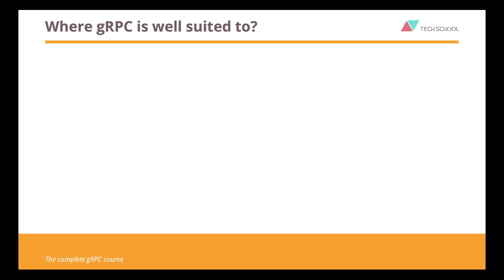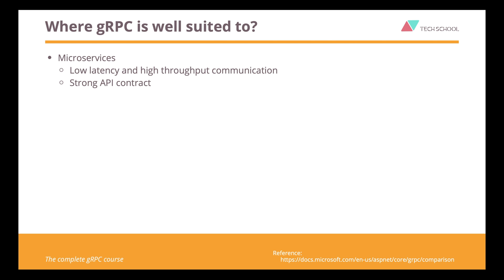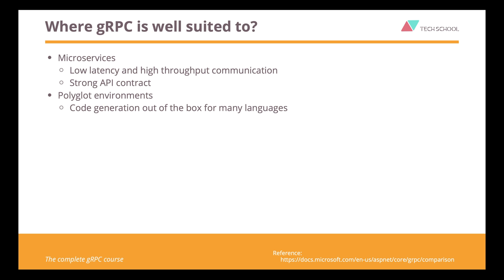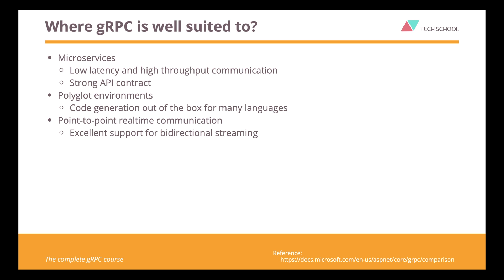So where and when should we use gRPC in order to take full advantage of it? Microservices is where gRPC really shines, since it enables low latency and high throughput communication, as well as strong API contracts. gRPC is also suitable for polyglot environments, because it provides code generation out of the box for many programming languages. Point-to-point real-time communication is also a good place for gRPC, since it has excellent support for bidirectional streaming.